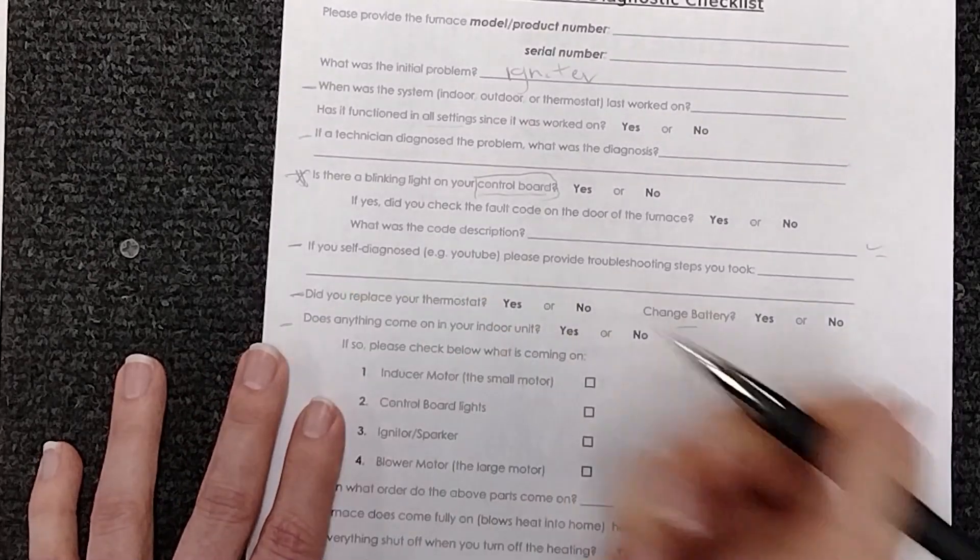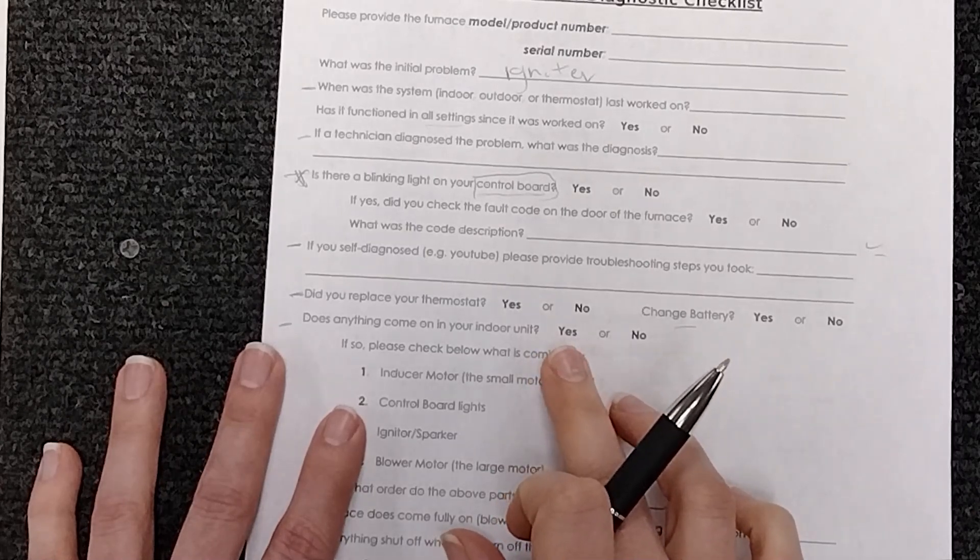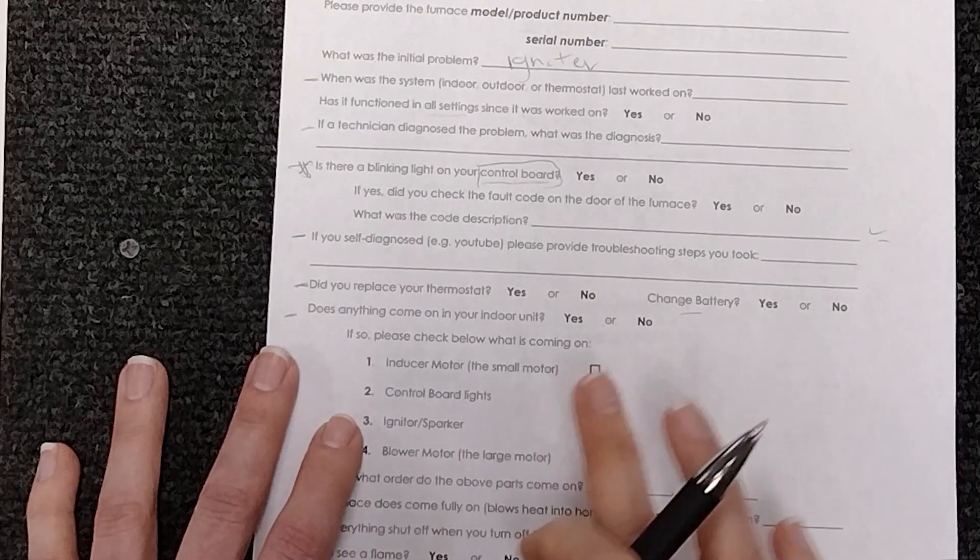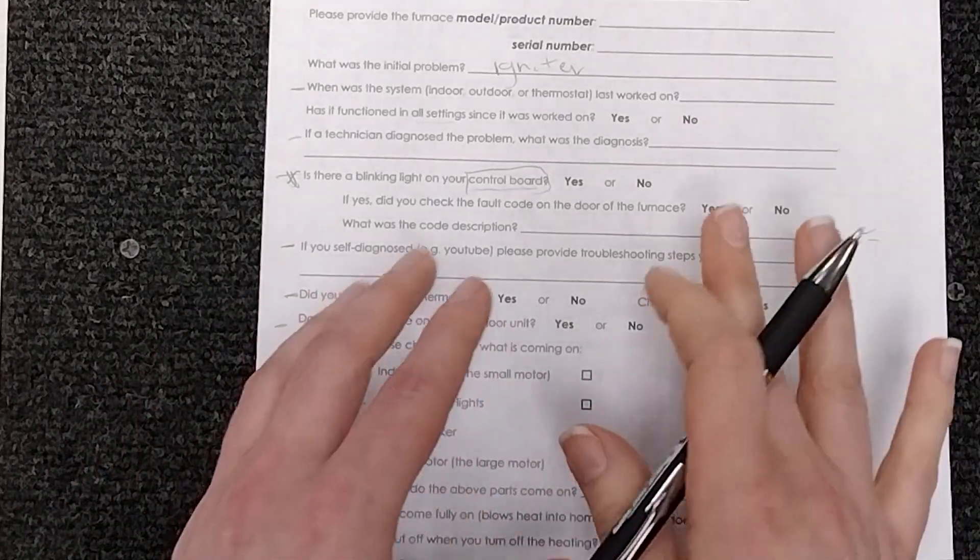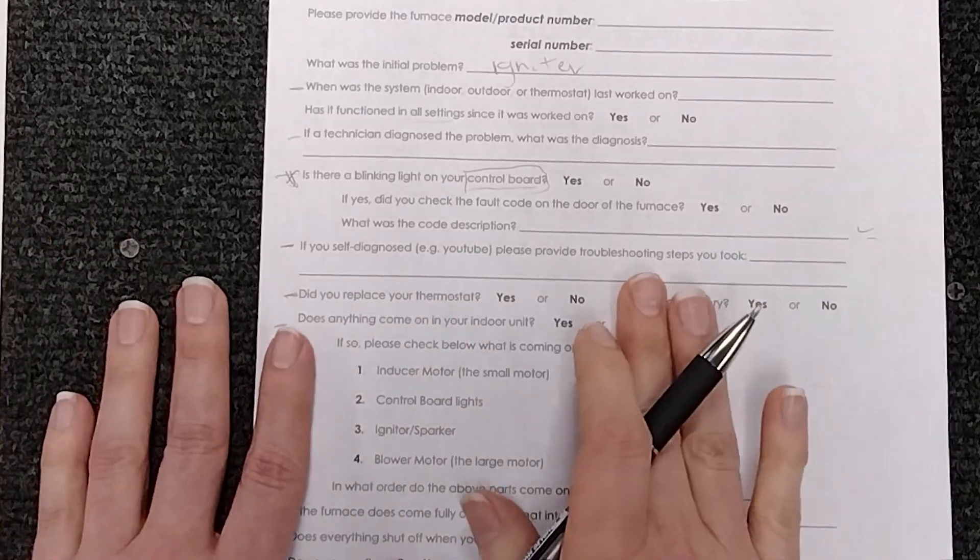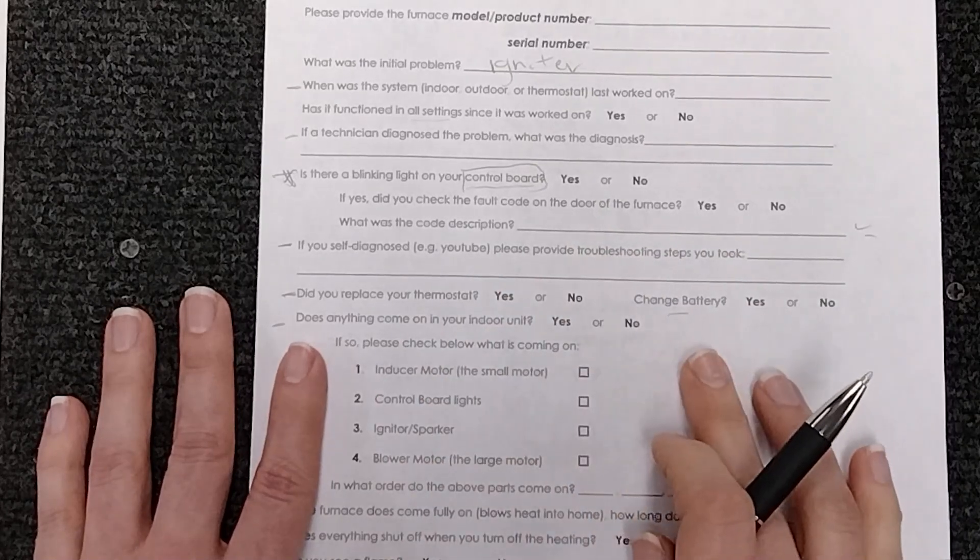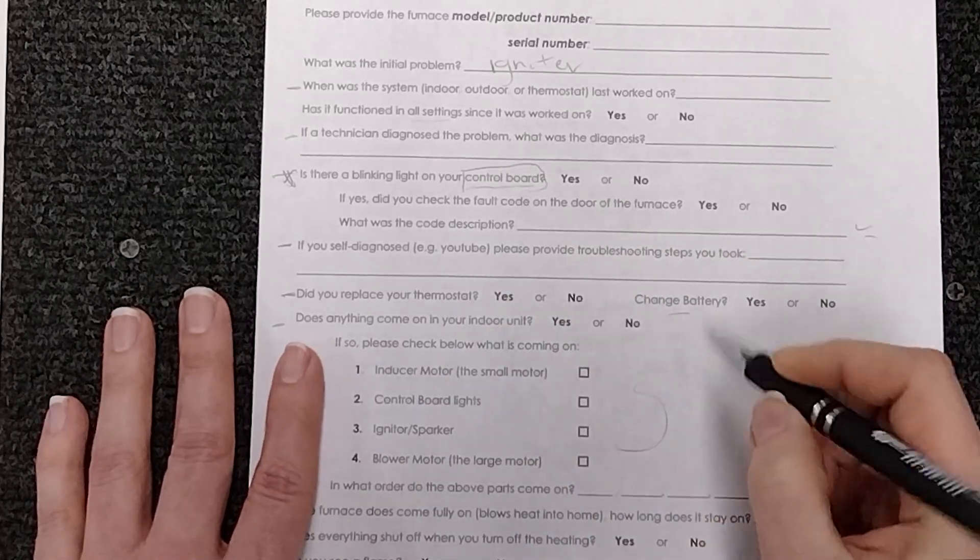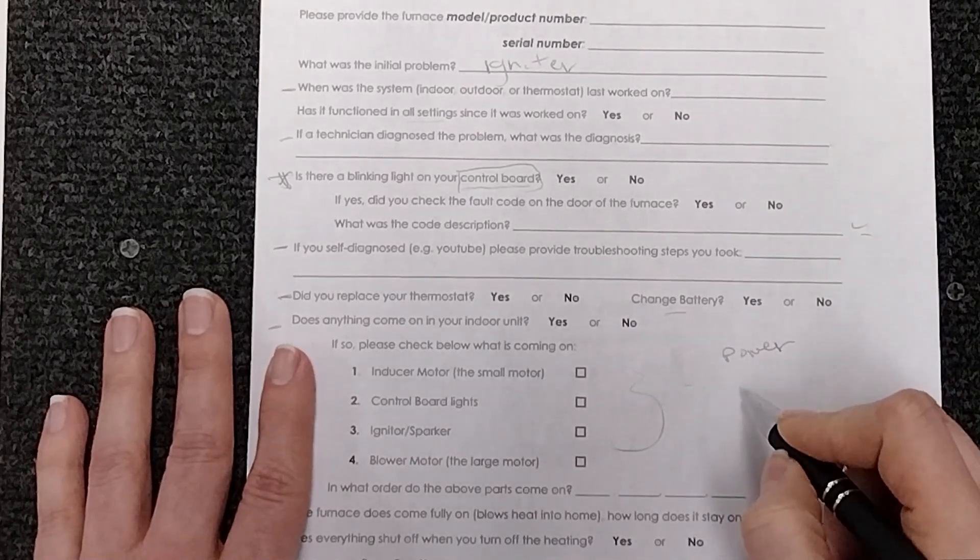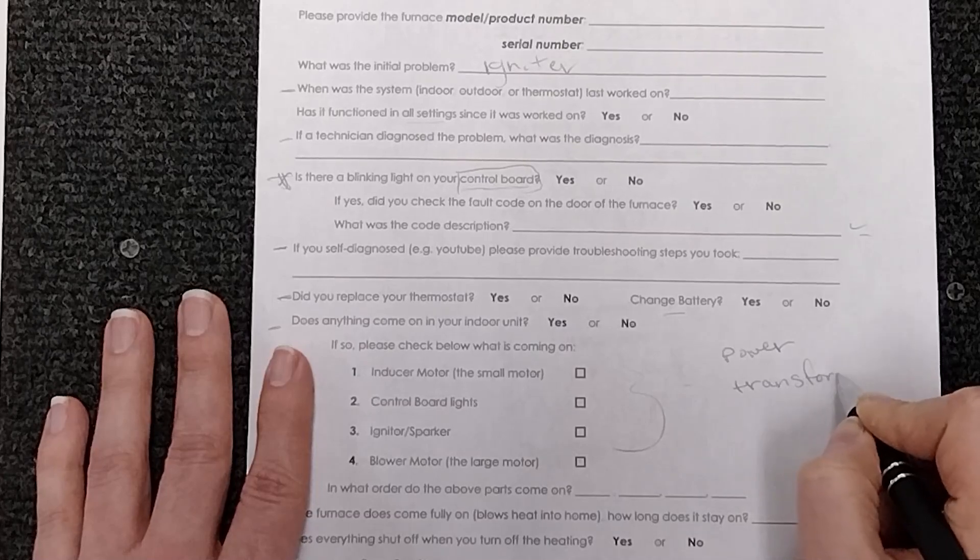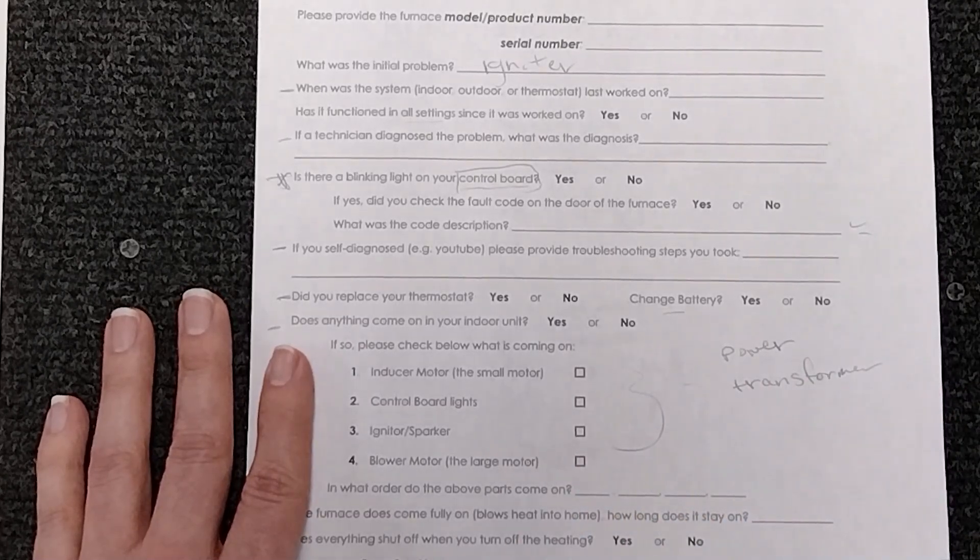This is a very important one does anything come on in your indoor unit. If it does does anything come on in your outdoor unit? Does your thermostat come on? So first and foremost make sure that anything is coming on at all. If nothing is coming on at all you want to check your power or you want to check your transformer and just see if any of those are causing a problem.